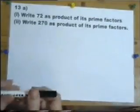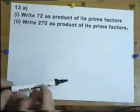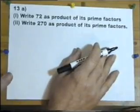Right, 72 as a product of its prime factors. Well, product means multiply, and prime factors means prime numbers.